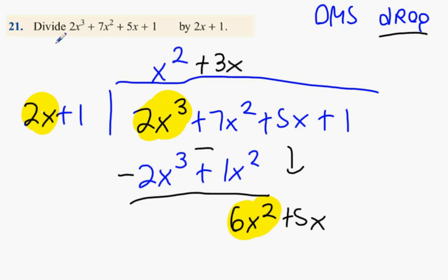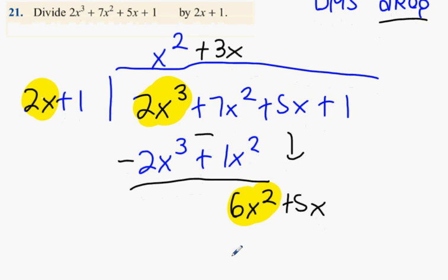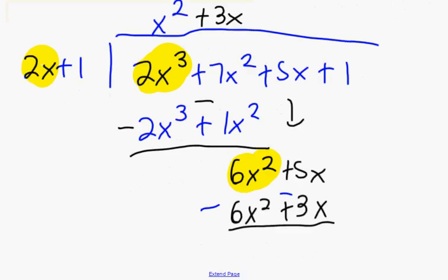Multiplication stage. 3x times 2x? 6x squared. 3x times 1? 3x. What comes after the multiplication stage? Subtraction. What have we got left over? 2x.